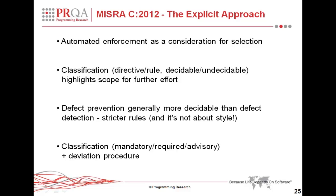Another feature of MISRA C 2012 is that it's about preventing defects rather than detecting defects. It applies early in the software lifecycle, and rules can be stricter than necessary — but this strictness in some cases helps avoid undecidability. Sometimes this strictness gets in the way, so MISRA C 2012 also foresees a deviation procedure, where deviations can be made to the strictness of rules, but these deviations should be reasoned and justified.